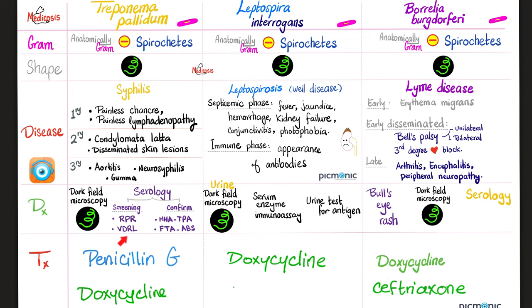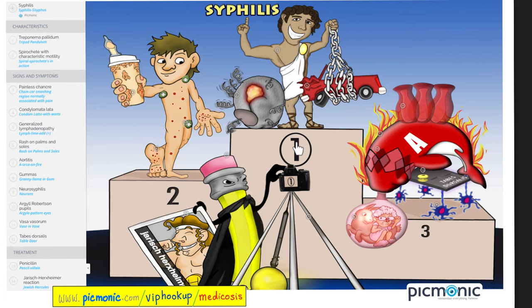To diagnose syphilis: dark field microscopy from the painless chancre base to see spirochetes. In primary syphilis antibodies haven't developed yet, so serology is futile. In secondary and tertiary syphilis, serology works. Screening tests include RPR and VDRL (ask: what disease causes falsely positive VDRL?). Confirmatory tests include MHA-TP and FTA-ABS. To diagnose leptospirosis: urine dark field microscopy, serum enzyme immunoassay, and urine antigen test. To diagnose Lyme disease: look for the rash, dark field microscopy, serology, and PCR. Treatment of syphilis: penicillin G (injection); if penicillin-allergic, use doxycycline; if pregnant and penicillin-allergic, do desensitization. All spirochetes can be treated with doxycycline.